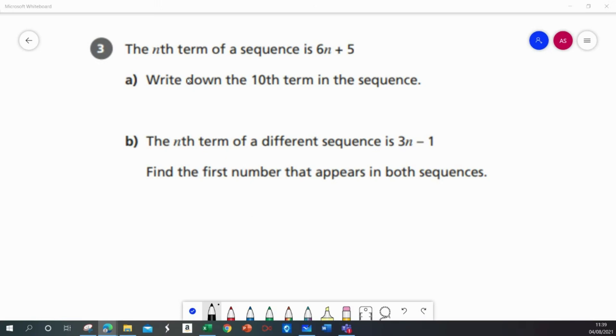This question tells us that the nth term of a sequence is 6n plus 5. For part a we're asked to write down the 10th term in the sequence.